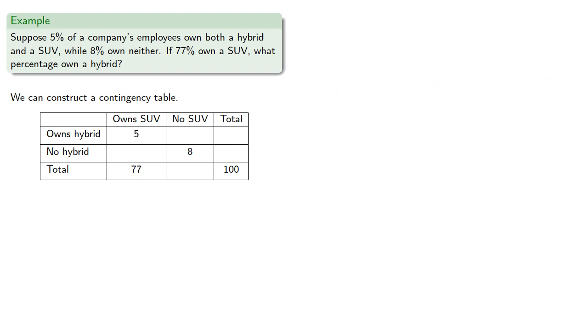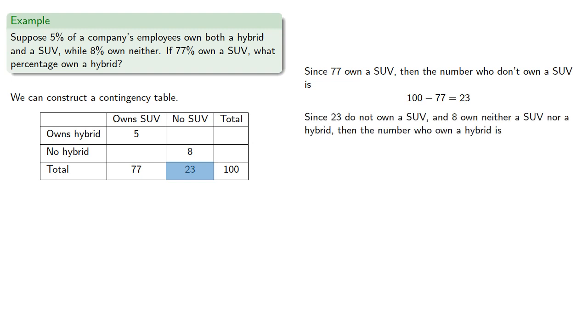So now we can start filling out the table. Since 77 own a SUV, then the number who don't own a SUV is 23. Since 23 do not own a SUV, and 8 own neither an SUV nor a hybrid, then the number who own a hybrid is 15. And since 5 own both a hybrid and an SUV, and 77 own an SUV, then the number who own an SUV but not a hybrid will be 72.